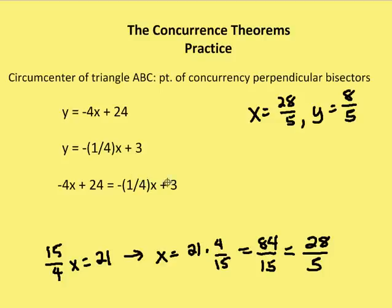Adding 4x to both sides and subtracting 3, we reorient the x values on the left-hand side of the equation. We end up with 15/4 x = 21, so x = 21 × (4/15) = 84/15 = 28/5. Substituting that back into either equation gives us a value for y of 8/5. So the circumcenter — the point of concurrency of the perpendicular bisectors — is (28/5, 8/5).